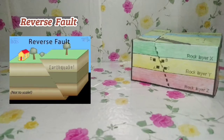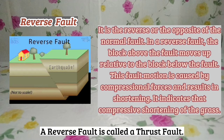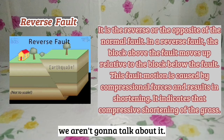Now let's talk about the reverse fault. From the word itself, it is the reverse or the opposite of the normal fault. In a reverse fault, the block above the fault moves up relative to the block below. This fault motion is caused by compressional forces and results in shortening, indicating compressive shortening of the crust. A reverse fault is called a thrust if the dip angle of the fault plane is small, but in this case, we aren't going to talk about it.